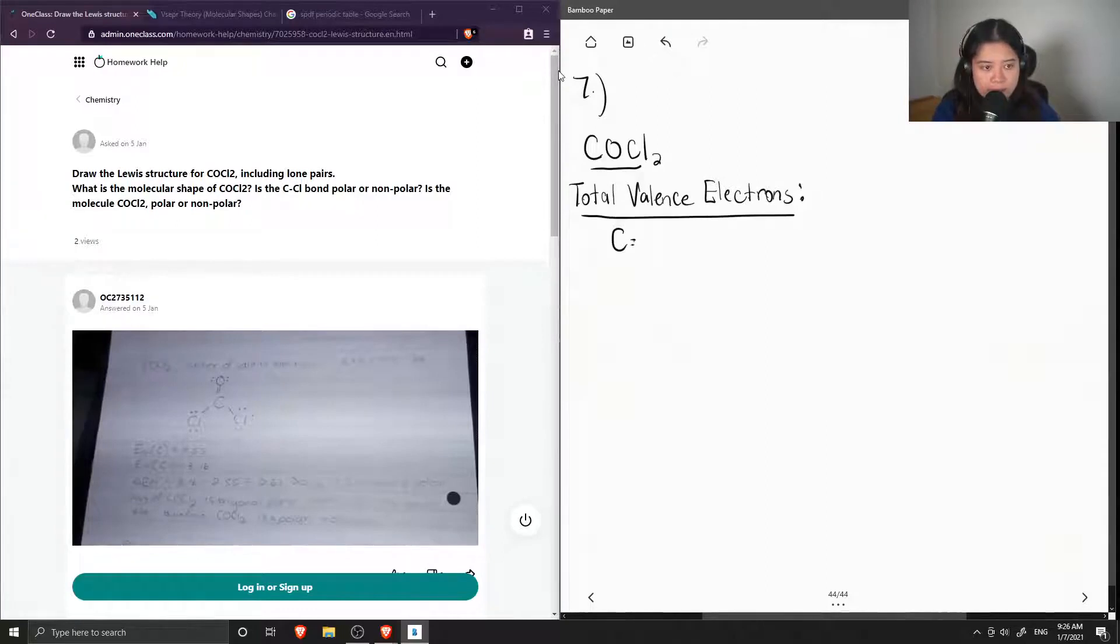So carbon contains four electrons, oxygen contains six, and a chlorine atom contains seven, and there are two chlorine atoms, so we multiply this by two. And then if we add these all up, you get a total number of 24 valence electrons.